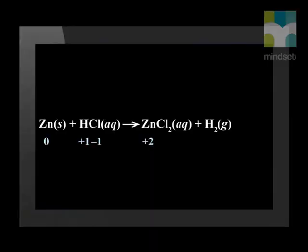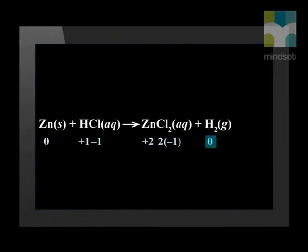Now let's look at the products. Zinc is now bonded with chlorine atoms to form a zinc chloride compound. The zinc has become an ion with a charge of plus two. The chloride ion still has a charge of negative one, but you will notice that there are two chloride ions joined to the zinc ion. Finally, the hydrogen molecule is now by itself and therefore has a zero charge. Now look at these charges and see if there has been a change as they went from reactants to products.